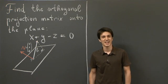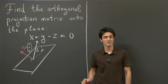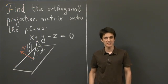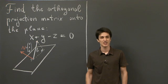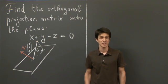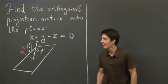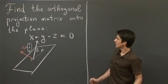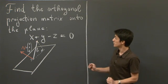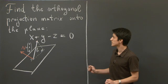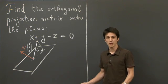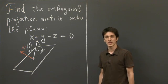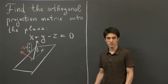Hi, guys. My name is Nicola. In this video, we're going to work out an example of an orthogonal projection matrix. Specifically, we're going to compute the projection matrix onto the plane given by the equation x plus y minus z equals 0.